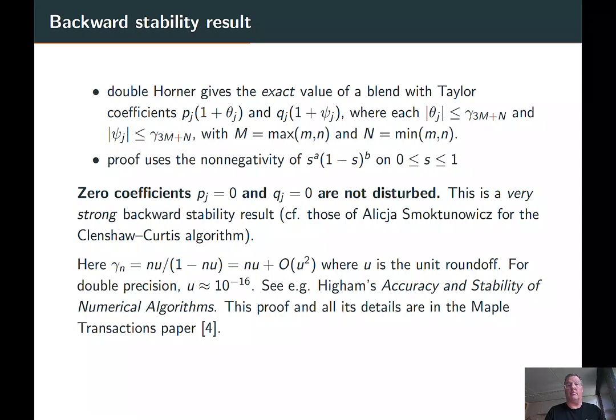In particular, zero coefficients—p_j equals 0 and q_j equals 0—are not disturbed. So you preserve some qualitative features of the underlying function. And it's a very strong backward stability result, which is comparable to some of those of Alicia Smoktunowicz for the Clenshaw-Curtis algorithm. She proved that in particular for Chebyshev polynomials, you get the same component-wise stability.